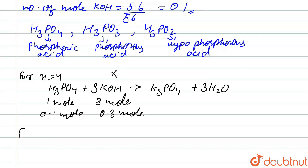Our next is for x equal to 3. H3PO3 plus KOH gives K2HPO3 and water.